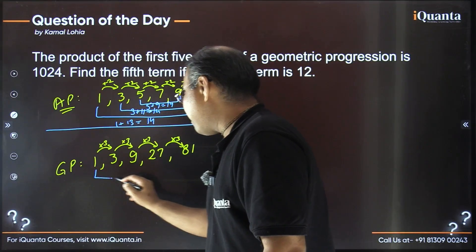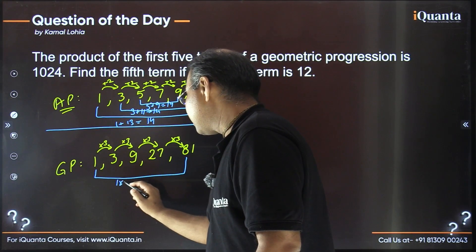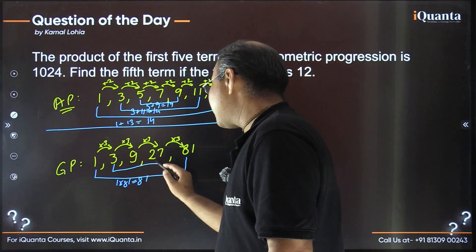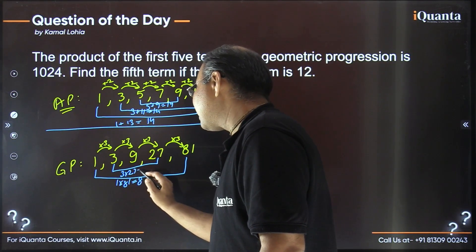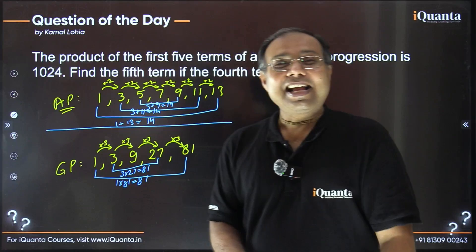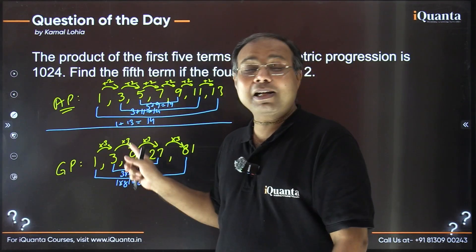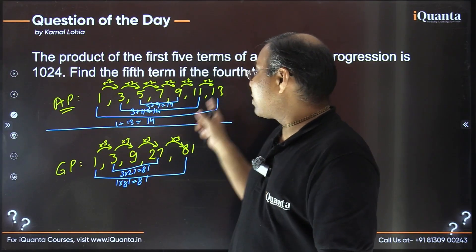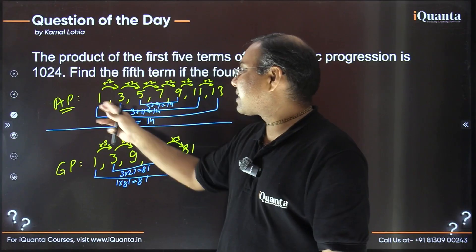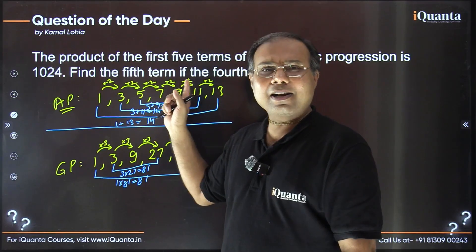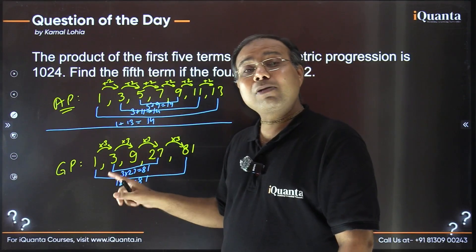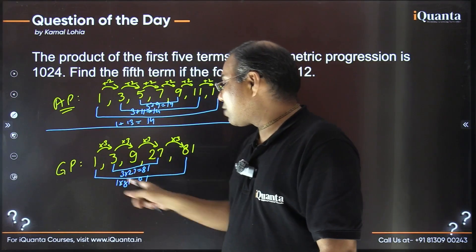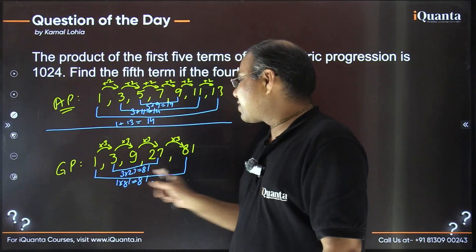So 1 × 81 = 81, and 3 × 27 = 81. The middle number is 9. What is the relation of 9 with 81? Earlier in AP, the middle was the arithmetic average — sum divided by 2. Now since they are multiplied, this is the geometric average. What equal numbers multiply to give 81? That's 9 × 9. So 9 is the geometric mean.